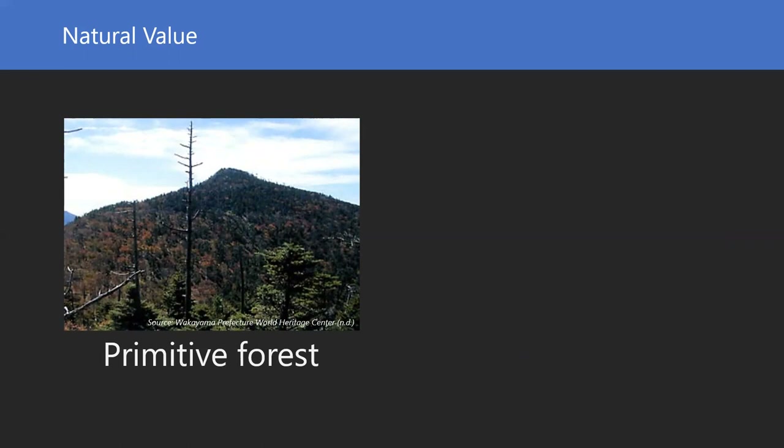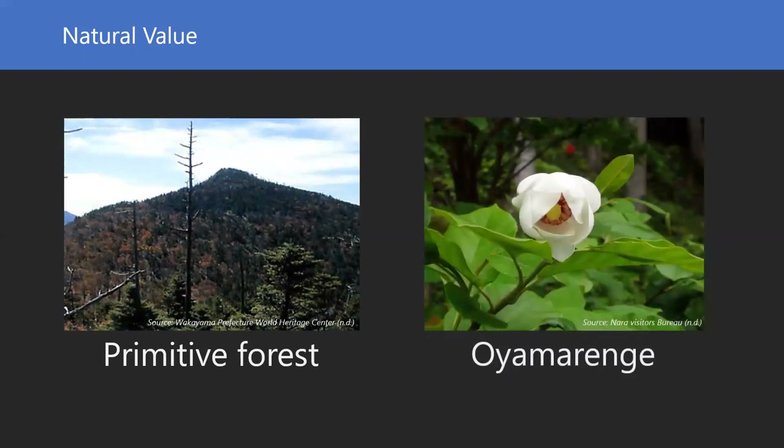In terms of natural value, Mount Hakkyogatake on the Omine Okugakimichi Trail has a primitive forest of spruce and birch. The peak also has the rare flower species Oyama-renge, which grows only at the summit. Omine Okugakimichi thus has both cultural and natural value, and these characteristics attract over 100,000 hikers and trekkers every year.